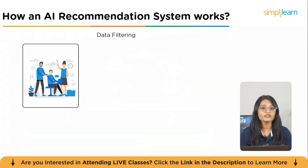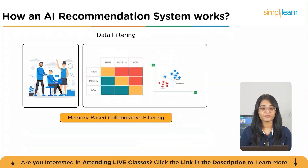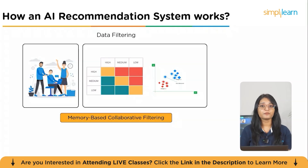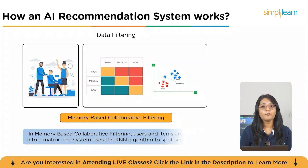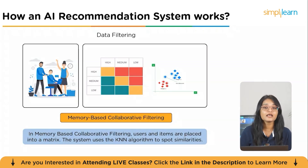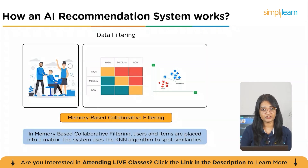The second sub-type is model-based collaborative filtering, which goes a step further using machine learning models to predict preferences by identifying deeper patterns in behavior. A popular technique here is matrix factorization, which breaks down a massive user-item matrix into smaller meaningful factors, making recommendations more accurate and efficient.